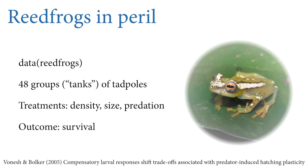There are three experimental treatments in these 48 groups. The first is the density of tadpoles in each tank — the number of tadpoles in the tank. The second is size — how big the tadpoles were when they were put in the experimental unit. The third is the presence or absence of predators, manipulated by covering and protecting the tank or not. The outcome of interest is survival — the number of tadpoles who survive.